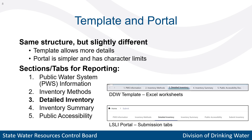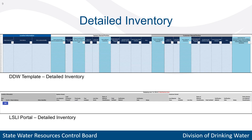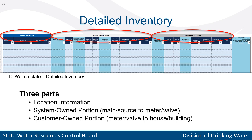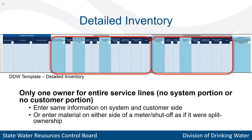The detailed inventory section is where you enter your service line information; the other sections are fairly straightforward to fill out. There are three parts to the detailed inventory: location information, system-owned service line information, and customer-owned service line information. A common question we get is what to do if service lines are entirely system-owned or entirely customer-owned. Because of the last column that classifies the entire line, both sides still need to be filled out even if there is only one owner. If there is no system-owned or customer-owned portion, please repeat the information so both sides are the same.